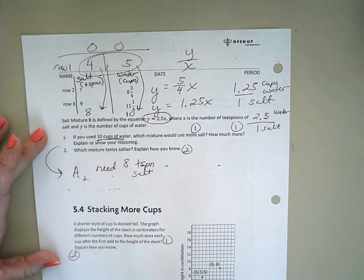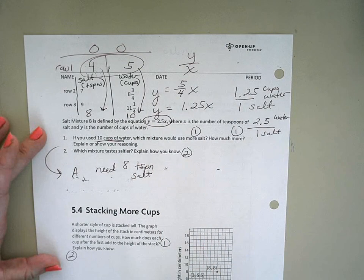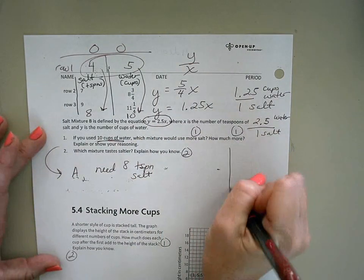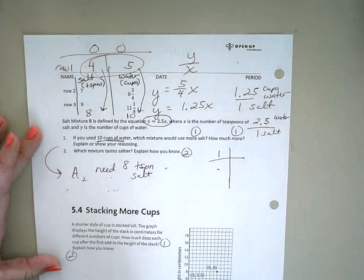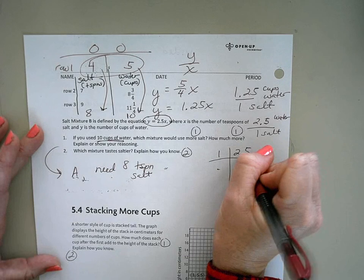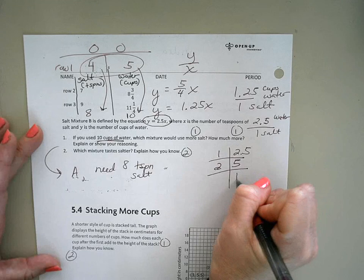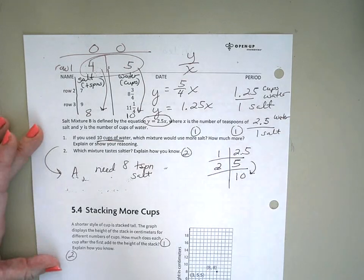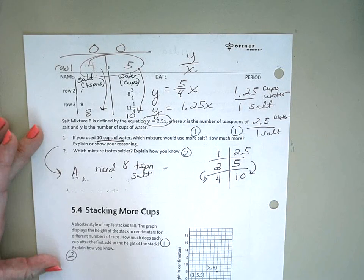For B, I could make a table. I could also go ahead and put it in the equation. Both of them would be fine. If I make a table here, and I have one teaspoon of salt and two and a half cups of water, that means two teaspoons of salt will be five cups of water, which means ten cups of water, I'm going to need four teaspoons of salt.